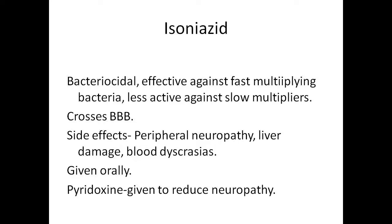When a person takes Rifampicin, the urine turns red or orange color, which indicates compliance with the drug. The side effects are liver damage and, to some extent, kidney damage. The next drug is Isoniazid. It is also a very powerful bactericidal drug, effective against fast multiplying bacteria and less effective against slow multipliers. It also crosses the blood-brain barrier. The side effects are peripheral neuropathy, liver damage, and blood dyscrasias. This drug is also given orally. To reduce peripheral neuropathy, pyridoxine or vitamin B6 is given.